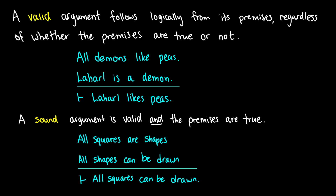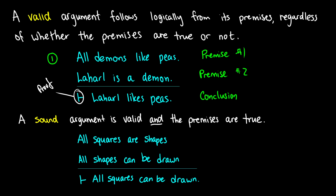A valid argument is any argument that follows logically from its premises, and it doesn't matter whether those premises are true or not. The things above the lines are called premises. This argument has two premises and a conclusion underneath the bar. We use this symbol to tell us what our conclusion is. So this argument says: all demons like peas, Laharl is a demon, therefore Laharl likes peas. This is a valid argument because structurally the conclusion follows from the premises.